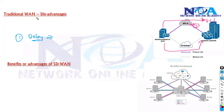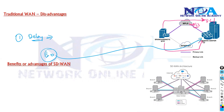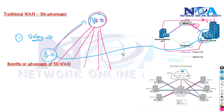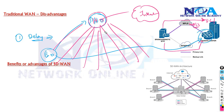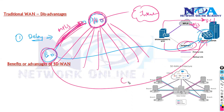One issue with traditional WAN is it adds delay, because application requests routed through the data center introduce extra latency. We can avoid this by ensuring branch offices connect directly to the internet, without needing to go through the head office. Most of the time, branch offices are connected so that even internet traffic goes through the head office, which adds load on the MPLS or WAN link.